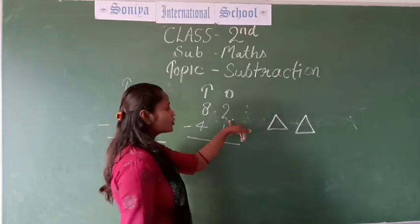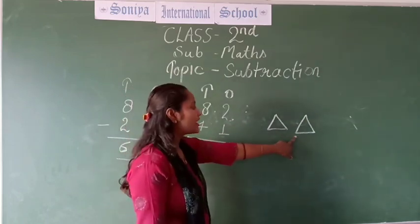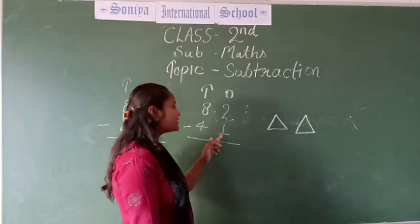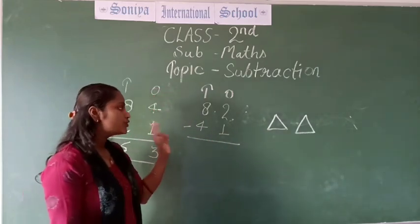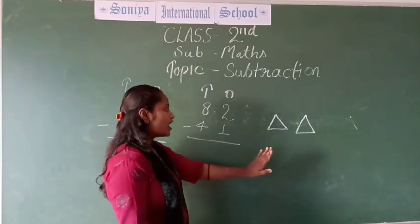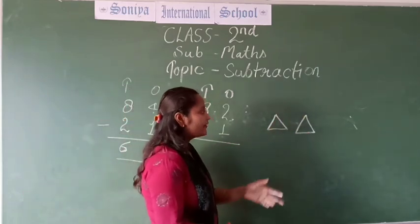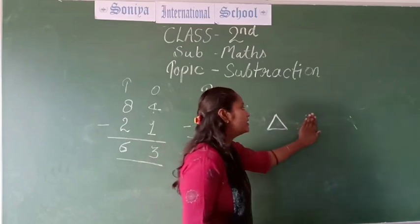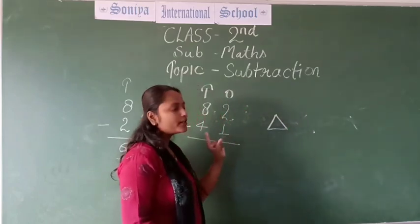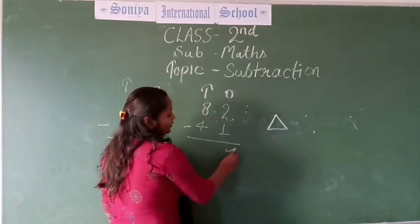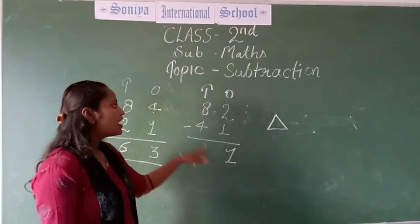So this is 2. We are making 2 triangles, and this is 1 and the sign of minus. So we are taking away 1 triangle. How many are left? Only 1 is left now. So we are writing 1 here.